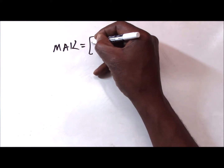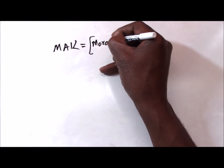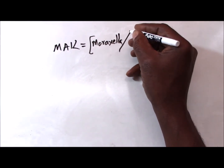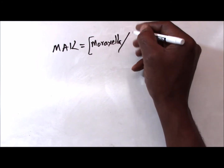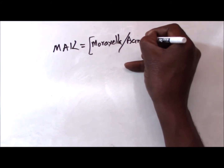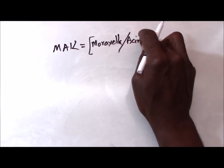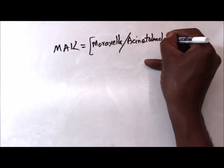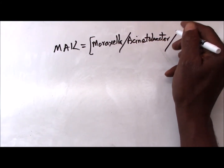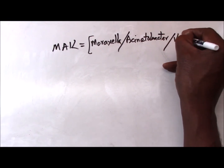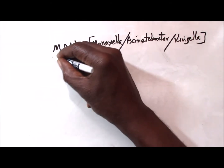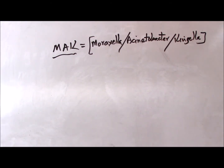The M in MAK stands for Moraxella, the A stands for Acinetobacter, and then finally the K stands for Kingella. So when you use that word MAK, you remember exactly what you should be recalling.